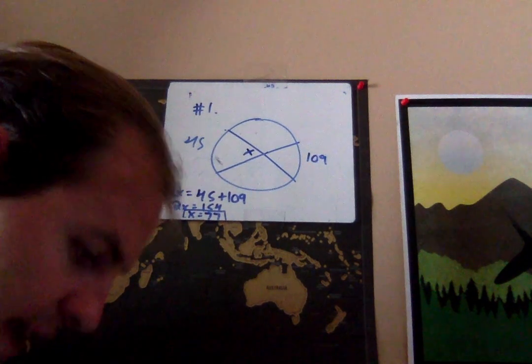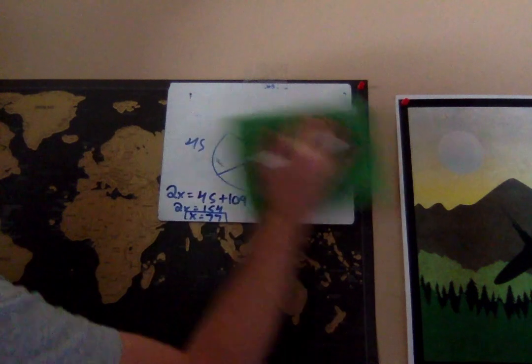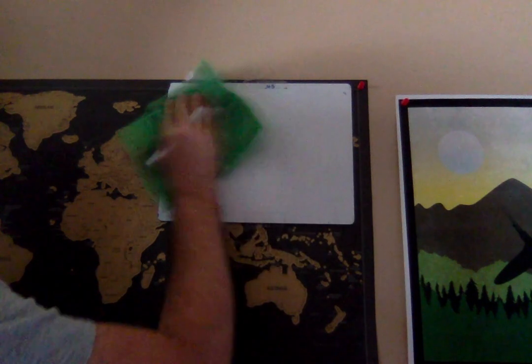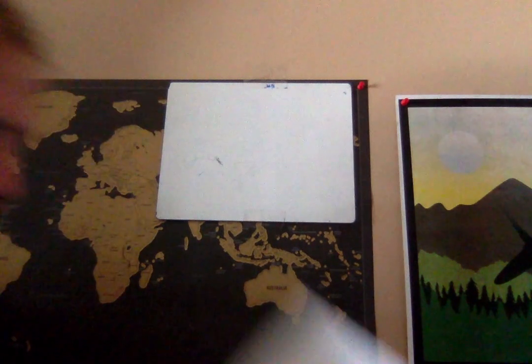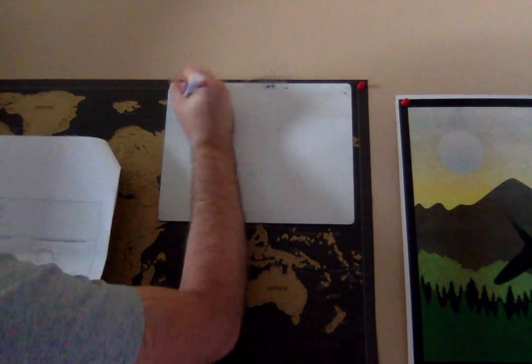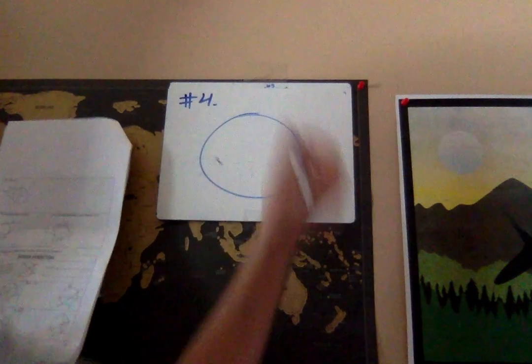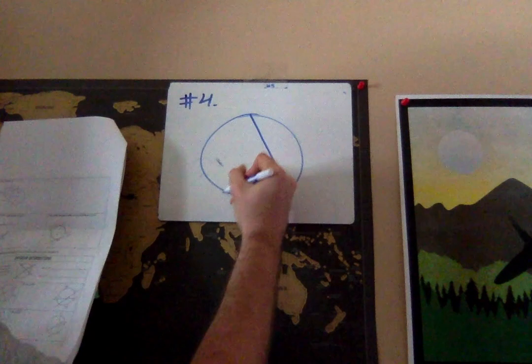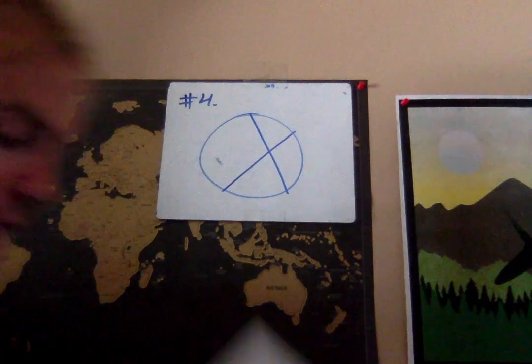Now let's take a look at a slightly different example. This one's going to be number four. The reason it's different is that it's going to take a little bit of realizing what we're given and what we're actually being asked for. Number four looks like this. I've got—in this case they're actually just chords, not secants, but it's going to work exactly the same way.